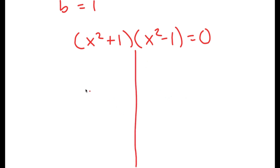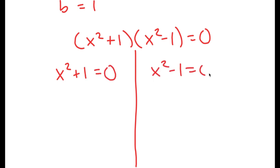Now this gives me two equations: x squared plus 1 is equal to 0, and x squared minus 1 equals 0. Let's first solve x squared minus 1 equals 0, because it's simpler than x squared plus 1 equals 0.